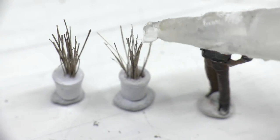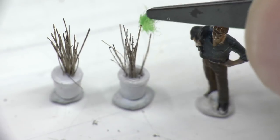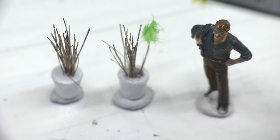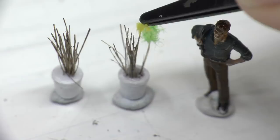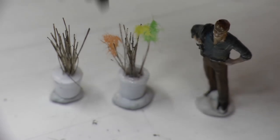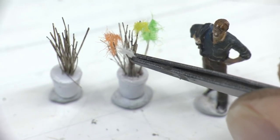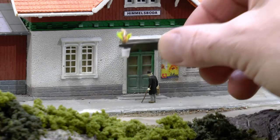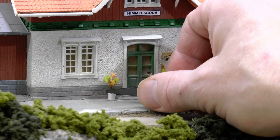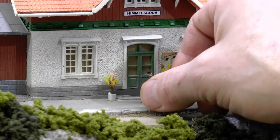I do that with a quick set glue. That's a cyano acrylate type glue. And I apply the feathers or the paper napkin pieces with a tweezer like this. Once dry, it's time to put them in place outside of the Himmelsboda station.